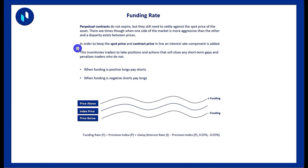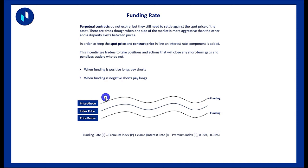When funding is positive, longs pay shorts, so you're incentivized to be in a short position during that funding period. When the funding rate is negative, shorts pay longs — if you're long you receive the funding, if you're short you pay it. Keep in mind this can add up to a large value since it's applied to the notional value of contracts you hold. Using a lot of leverage with a small collateral amount will eat into your position much more.